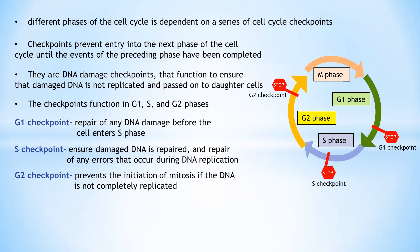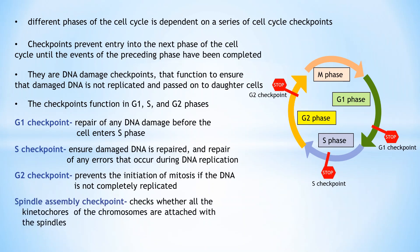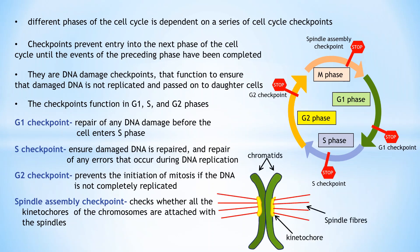Another important cell cycle checkpoint that maintains the integrity of the genome occurs toward the end of mitosis — it is the spindle assembly checkpoint. This checkpoint monitors the alignment of chromosomes on the mitotic spindle, ensuring that a complete set of chromosomes is distributed accurately to daughter cells. It checks whether all the kinetochores of the chromosomes are attached to the spindles. Failure of one or more chromosomes to align properly on the spindle causes mitosis to arrest at metaphase.